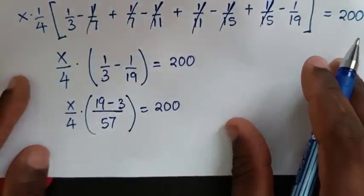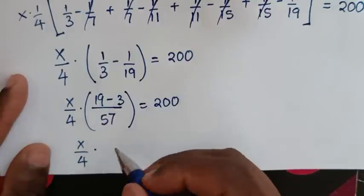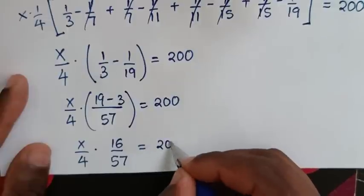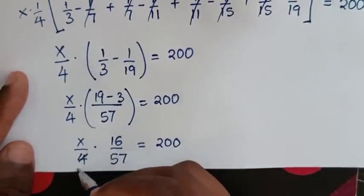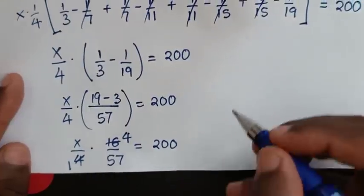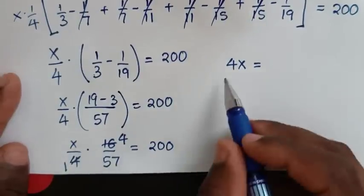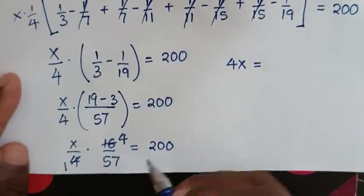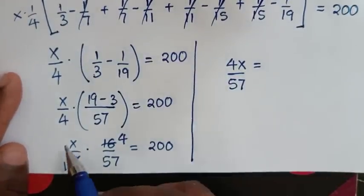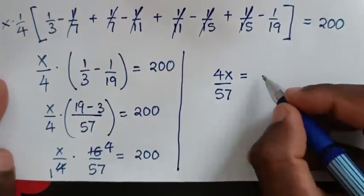Simplifying: x over 4 times 16 over 57 equals 200. The 4 in the denominator cancels with 16 to give 4, so we get 4x over 57 equals 200.